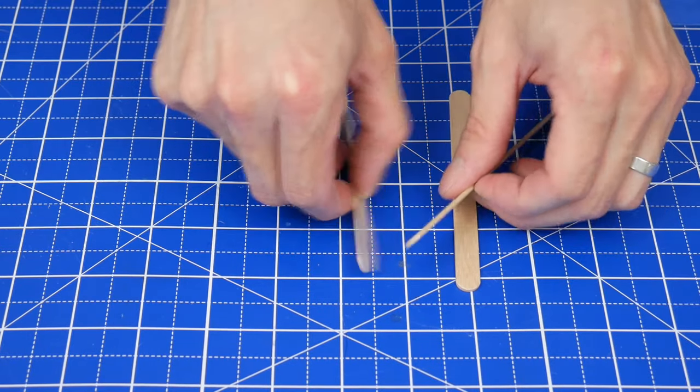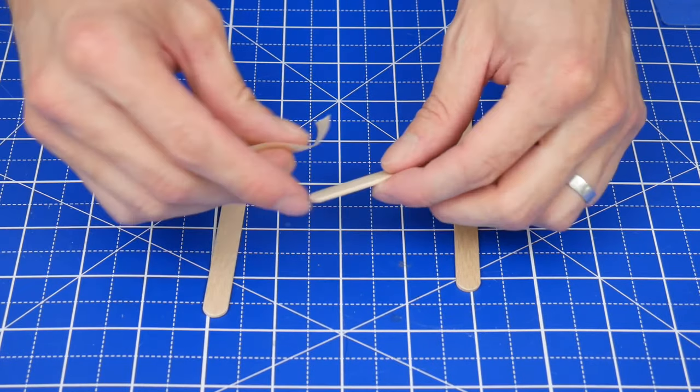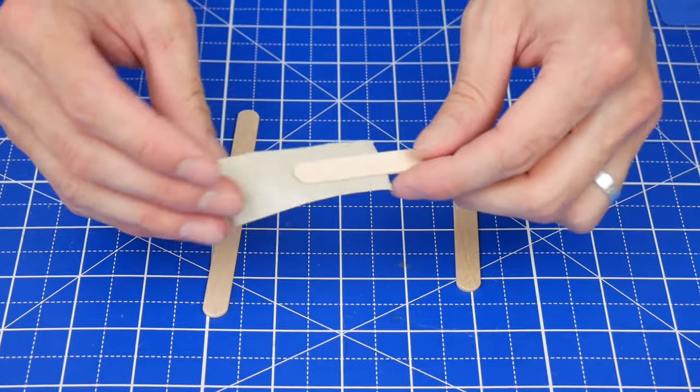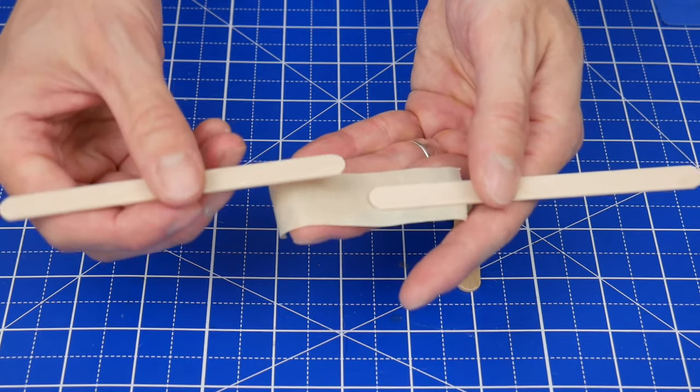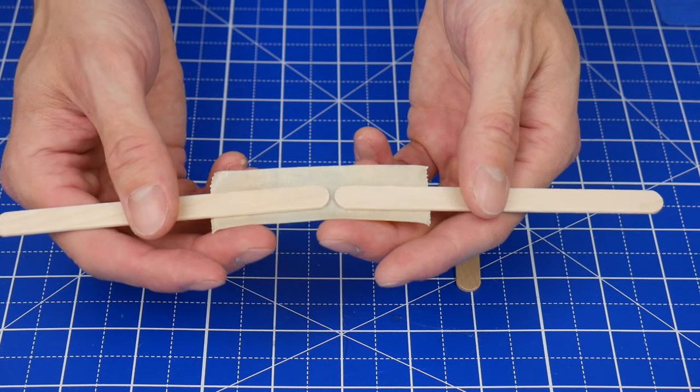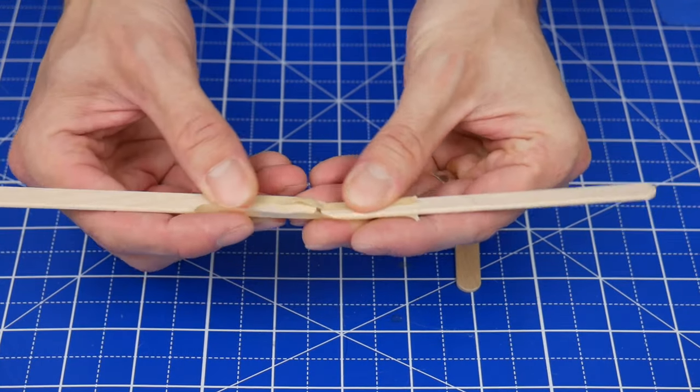The first step is to make two triangles out of craft sticks, and the best way to do that is to put a piece of tape on the end of one stick so some of the tape is still hanging off at the end, attach another stick just like this, then fold that tape over.